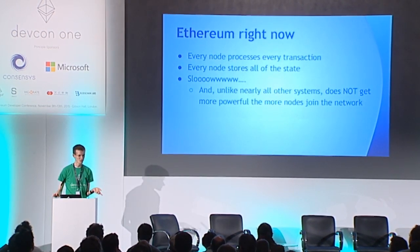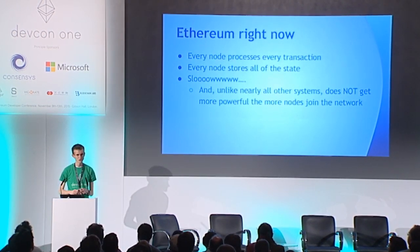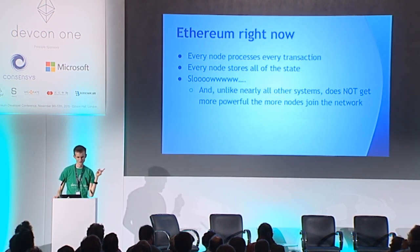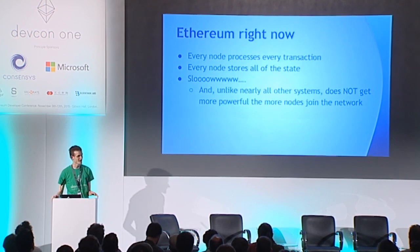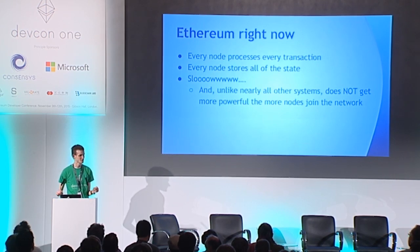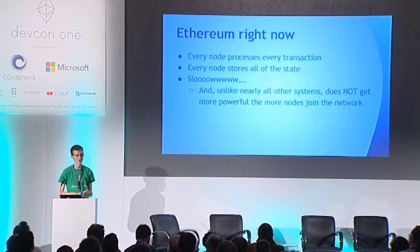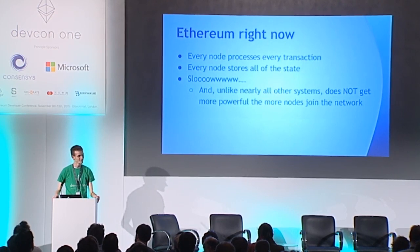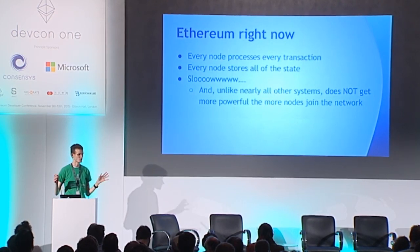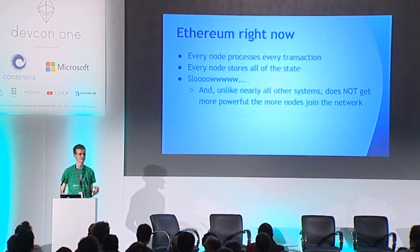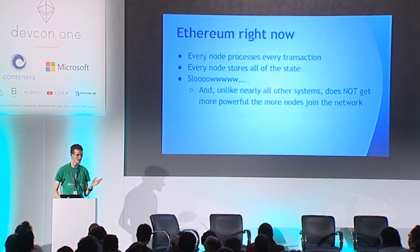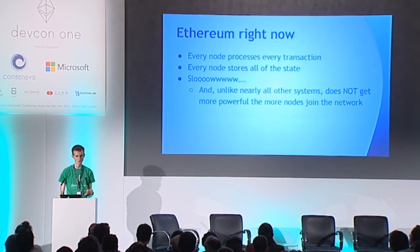Unlike nearly all other systems in the real world, this also does not get more powerful the more nodes join the network. In fact, it actually gets slightly less powerful with the universal algorithm of the size of the network. If you have 10 times more nodes, each and every node still processes every transaction — you're still where you started, with even more inefficiency.